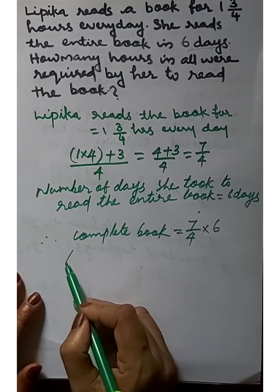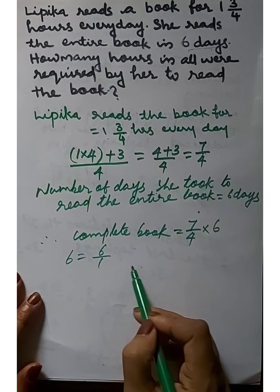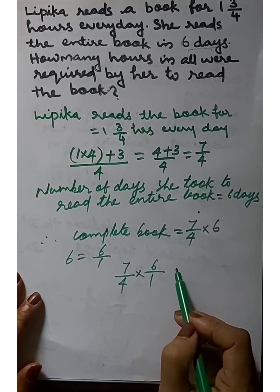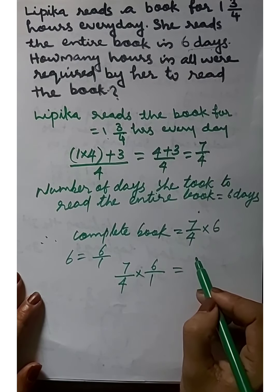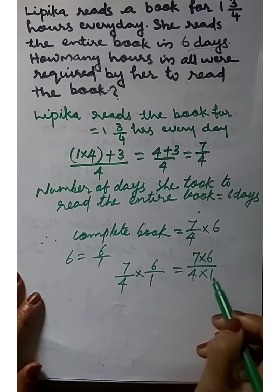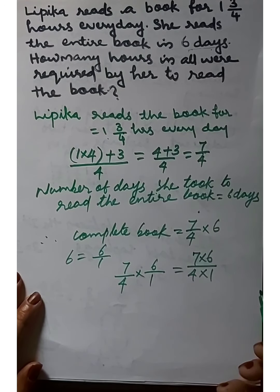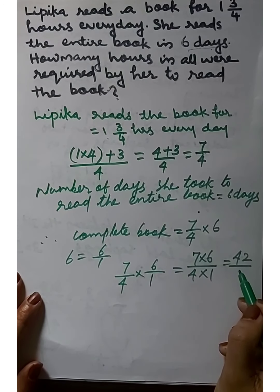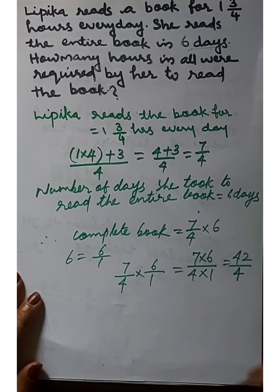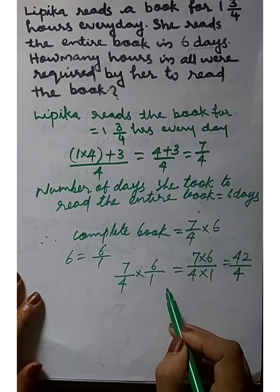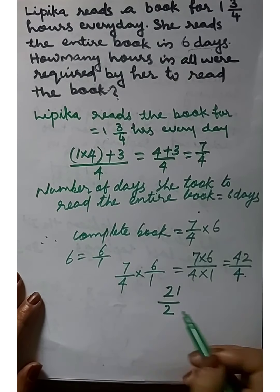We know that 6 equals 6/1. We write 7/4 × 6/1. We find the product of the numerators and the product of the denominators: 7 × 6 = 42, and 4 × 1 = 4. Since 42 and 4 are both even numbers, simplifying by 2, we get 21/2.